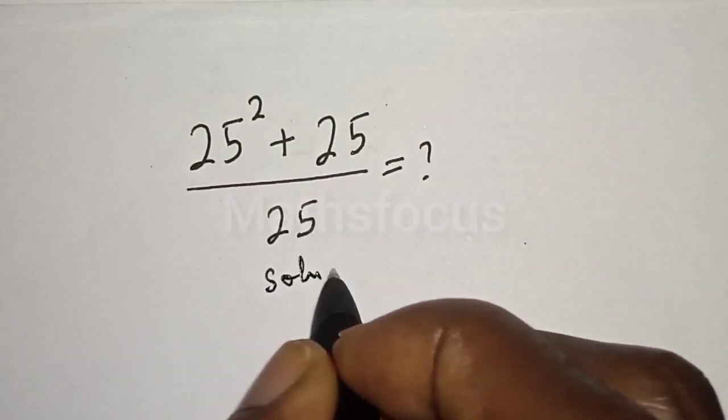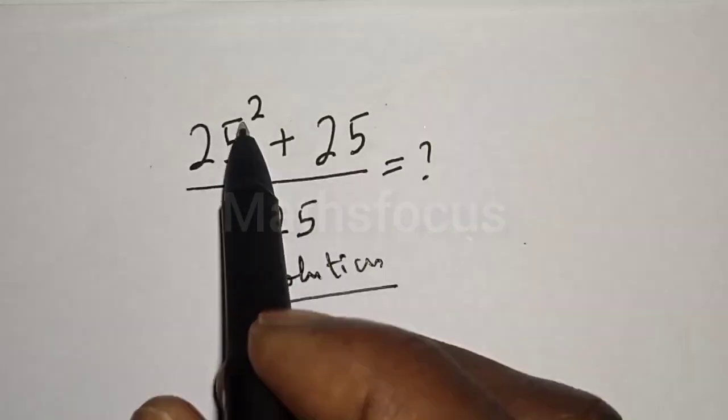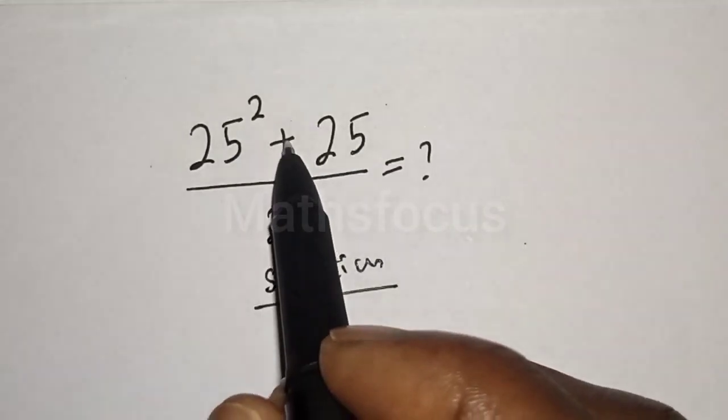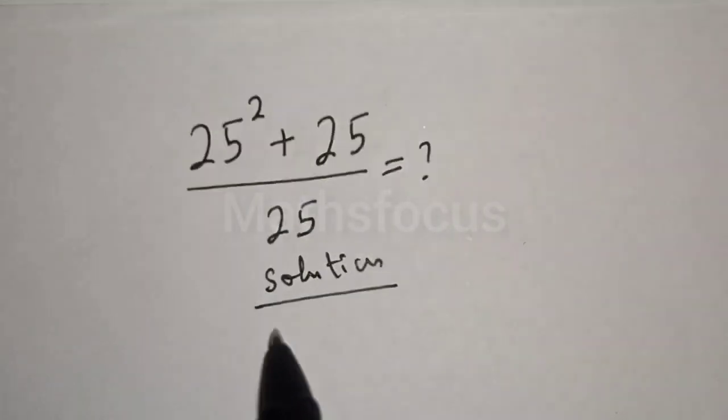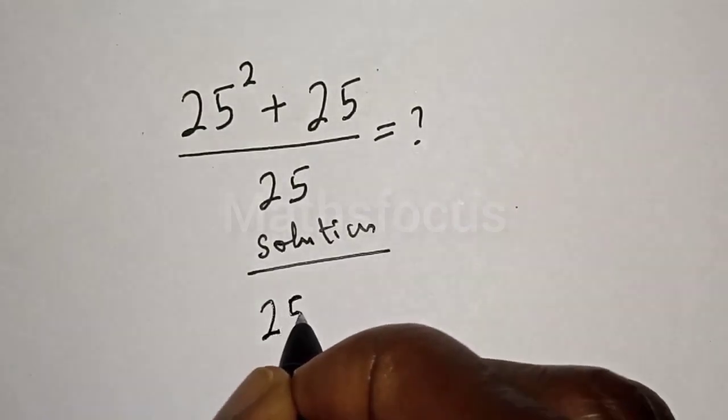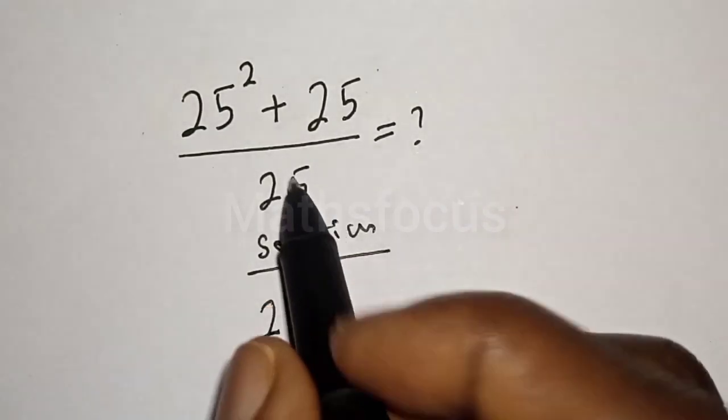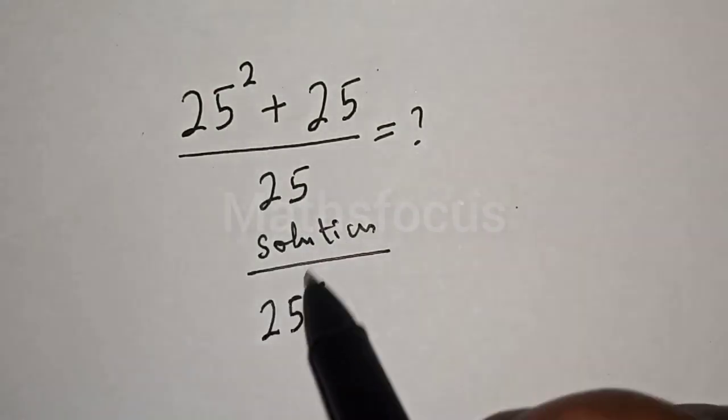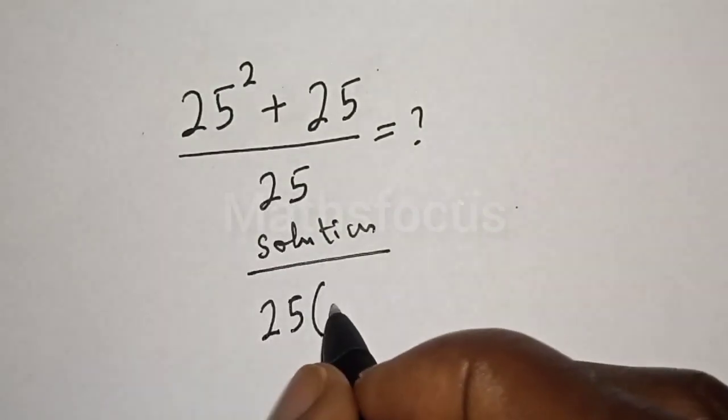We have 25 squared plus 25 at the numerator. Then 25 is common, let's bring it out: 25 bracket, 25 plus 1, then the remaining 25 at the bottom.